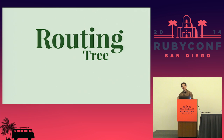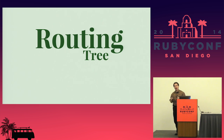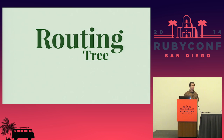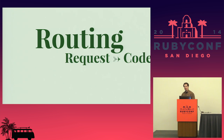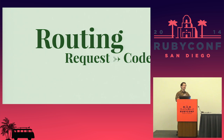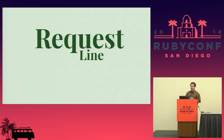The main feature that separates Roda from most other Ruby web frameworks is that it is designed around the concept of a routing tree. Since most programmers are not familiar with the routing tree concept, I'm first going to talk about what a routing tree is and how it works. Before I can talk about a routing tree, I need to talk about routing in general. Routing is the process of taking the request and finding the code that should handle that request.